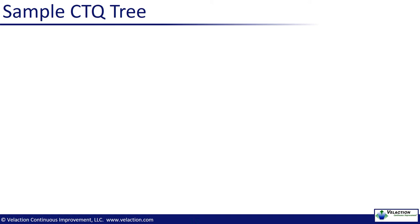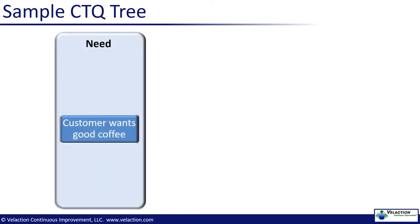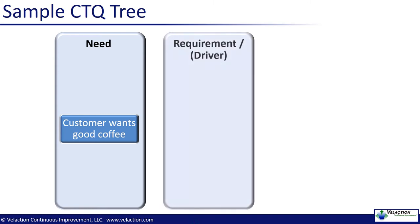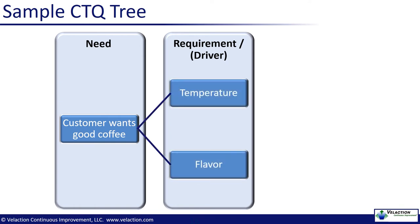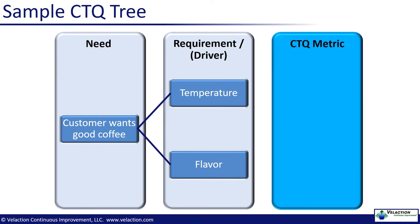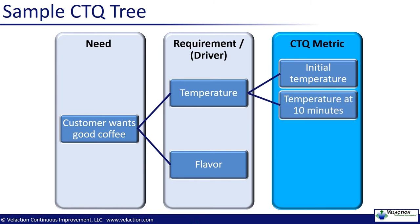Let's take a look at what a CTQ tree could look like. Let's assume we're taking a look at a customer's need to have a good cup of coffee. We'd want to take a look at a few of the requirements related to that need. In this case, we might focus on flavor and temperature. From those requirements, we would want to identify CTQ metrics that would let us know that we are meeting those requirements. Those metrics might take a bit of thought on your part. While something like temperature seems rather straightforward, your customers may have their own unique views on it. You might want a process metric that lets you know you are brewing the coffee at the right temperature. You may also have an output metric that gauges temperature from a coffee drinker standpoint — measuring at 10 minutes after purchase, when they get back to their desks, might be how they view temperature.